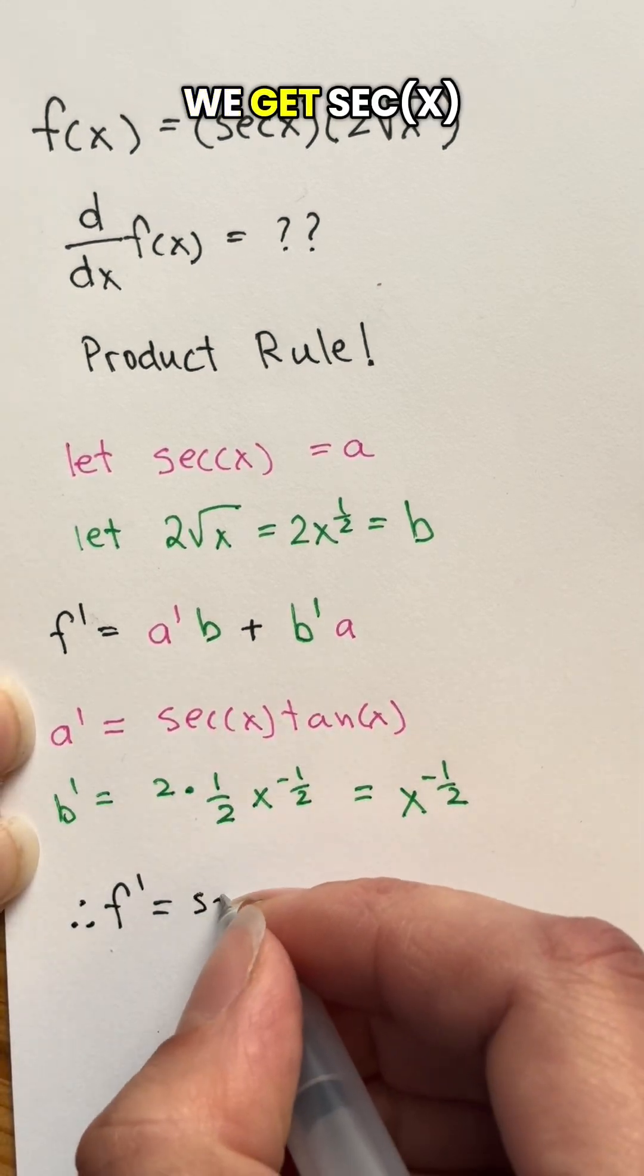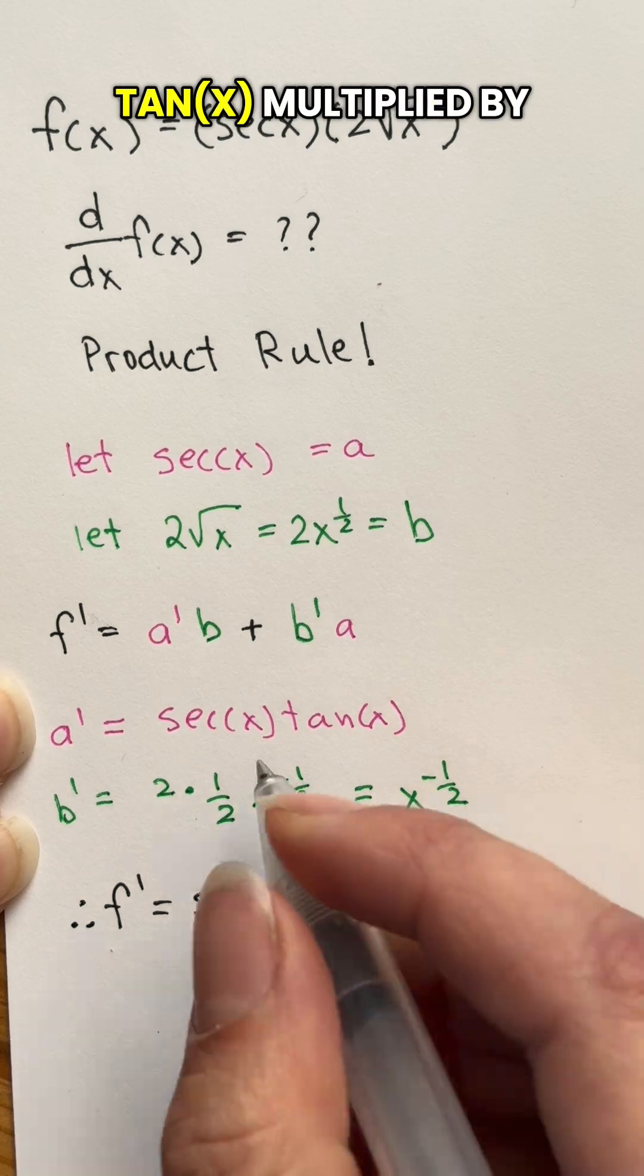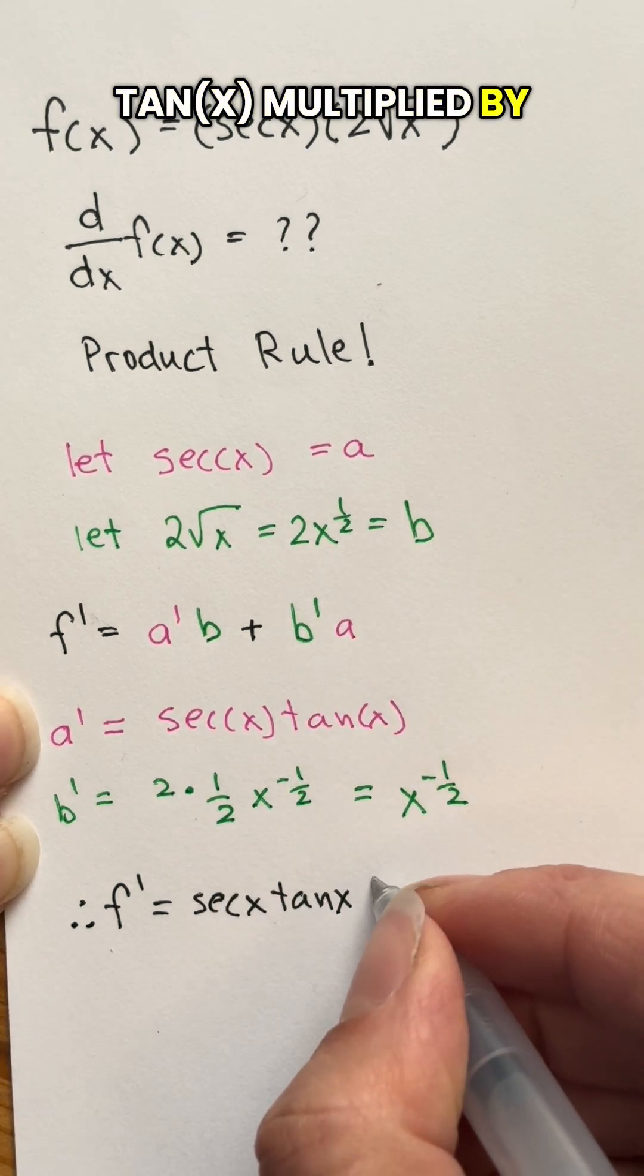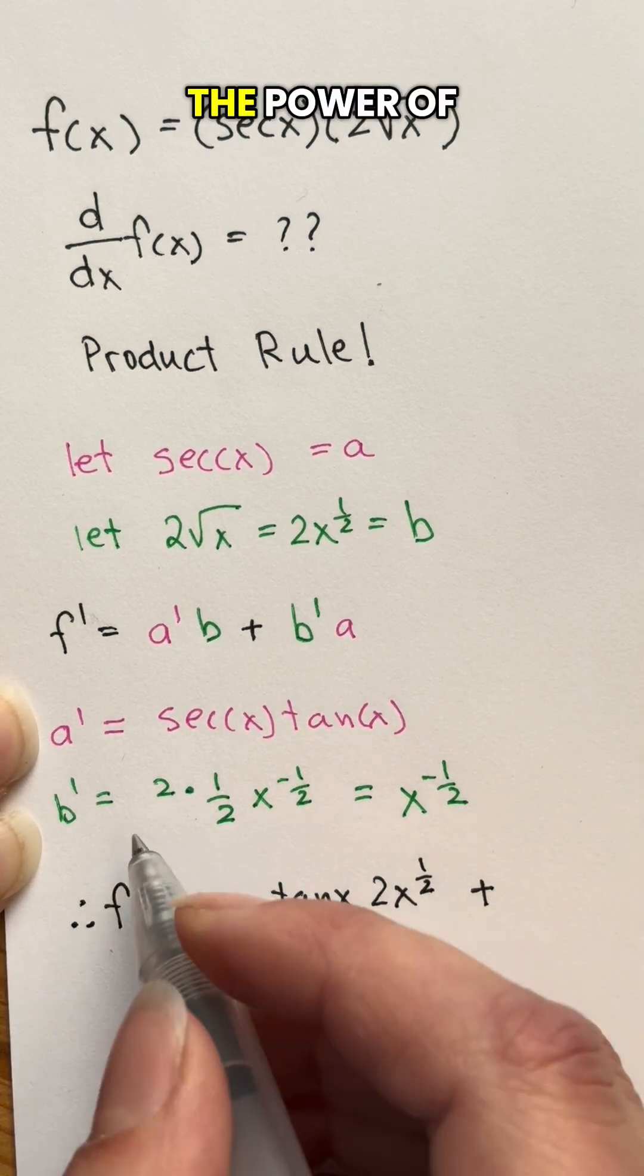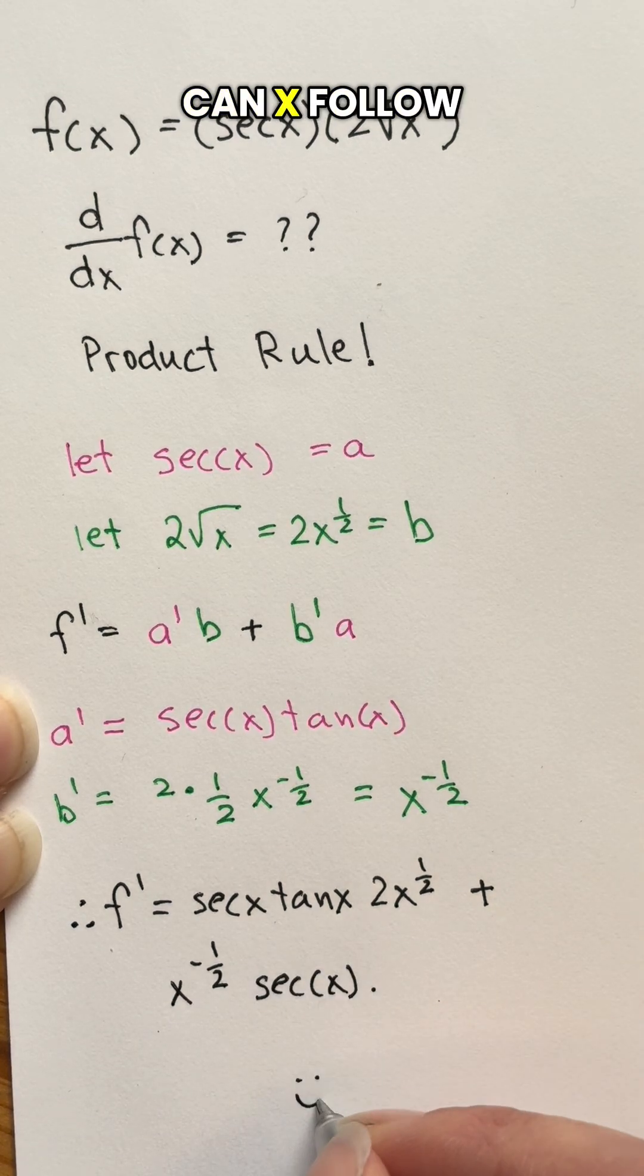Putting it together, we get secant x tan x multiplied by 2 times x to the power of 1 over 2 plus x to the power of negative 1 over 2 times secant x.